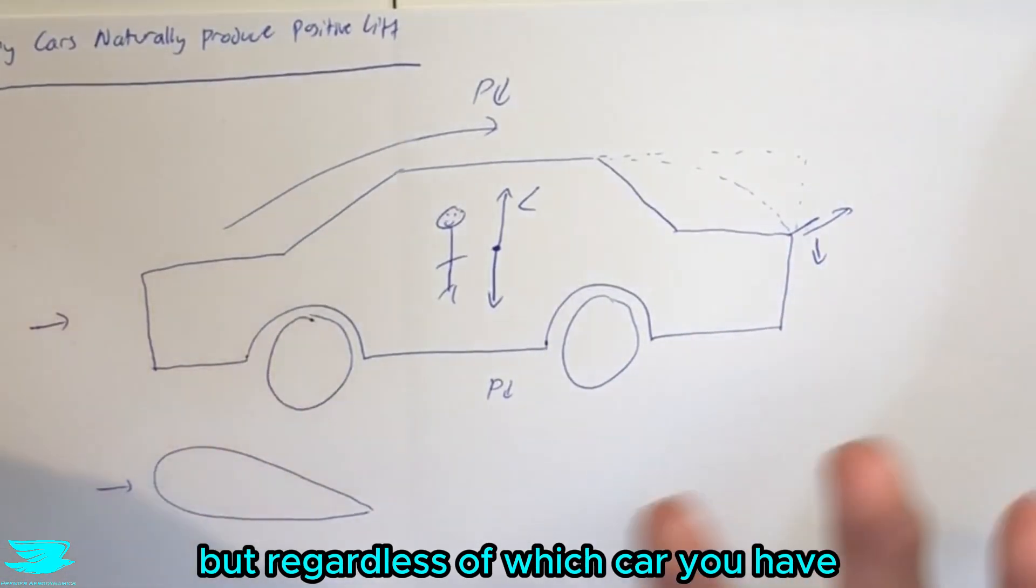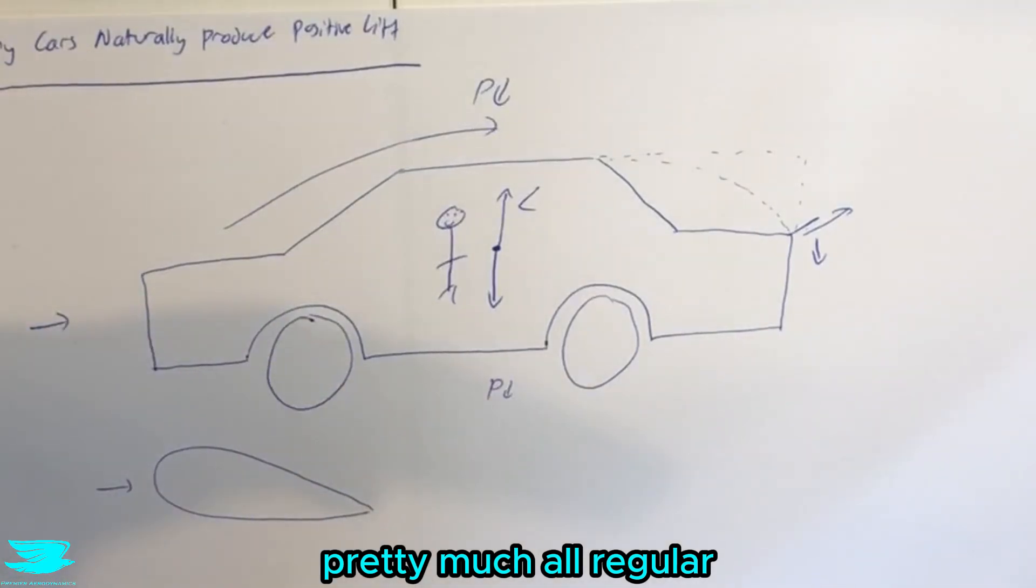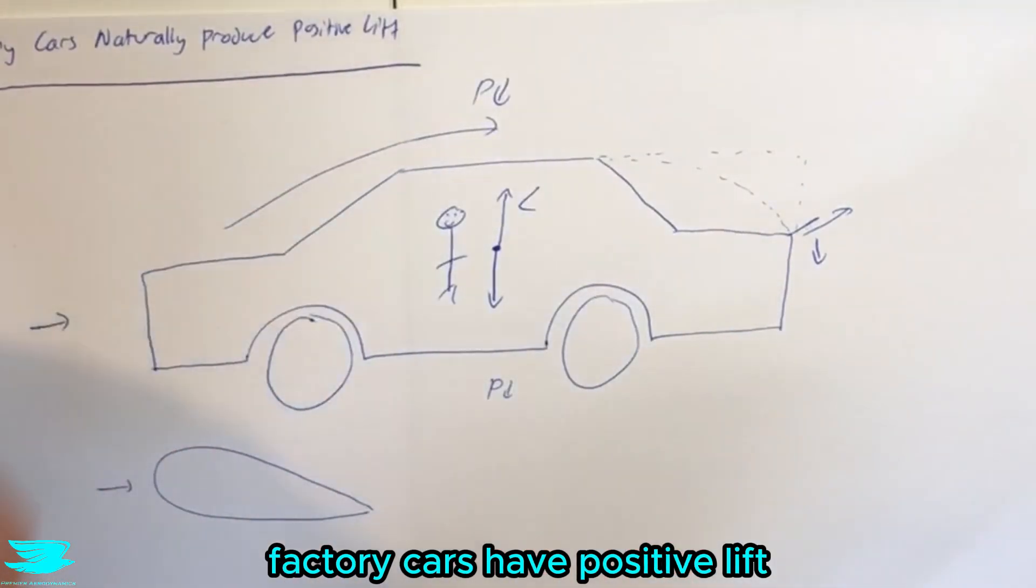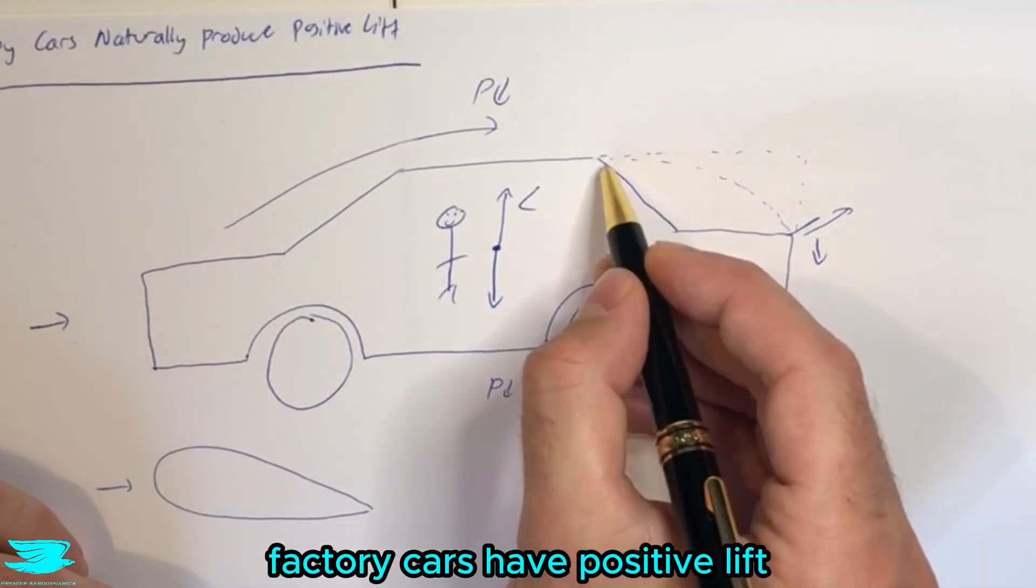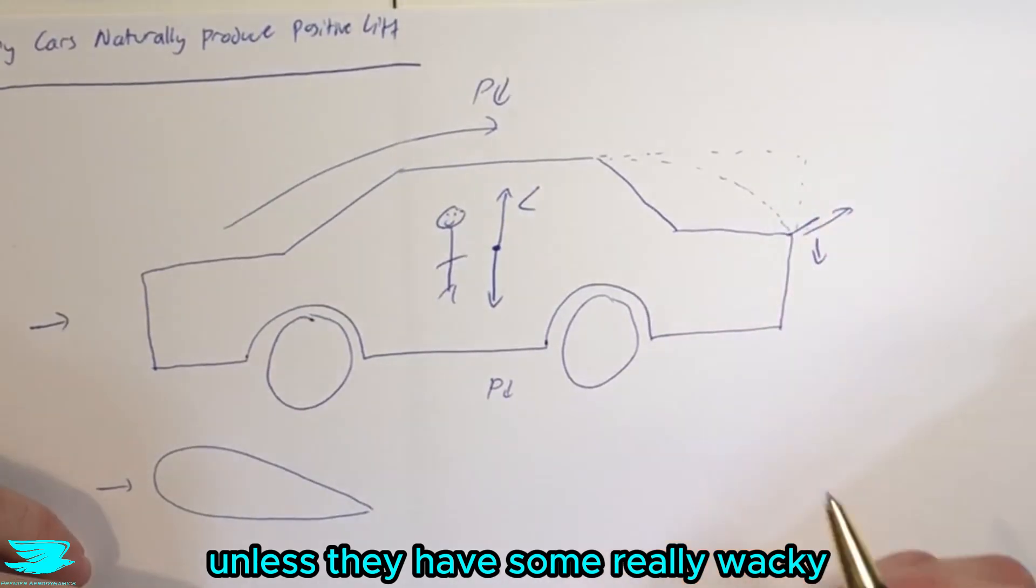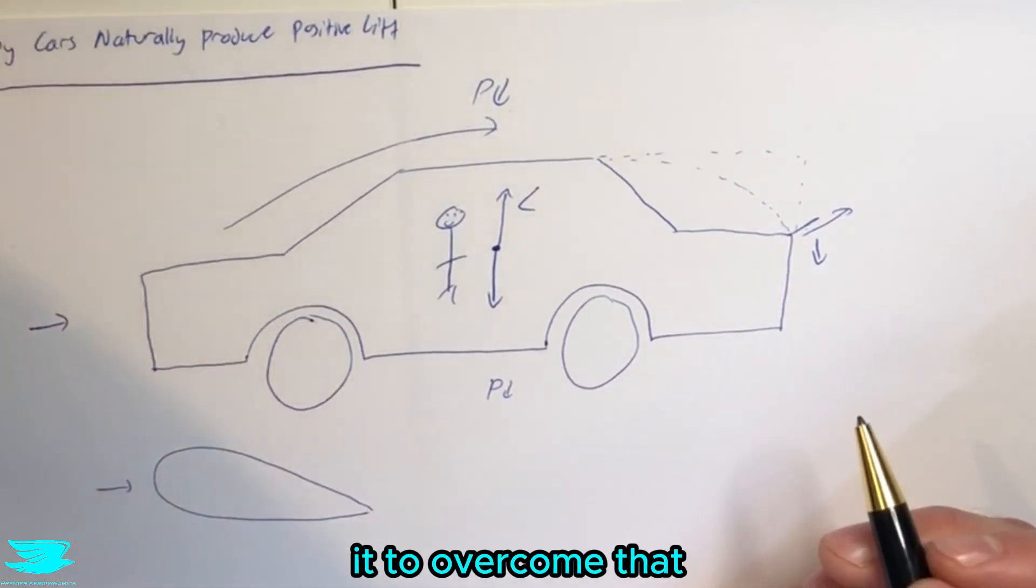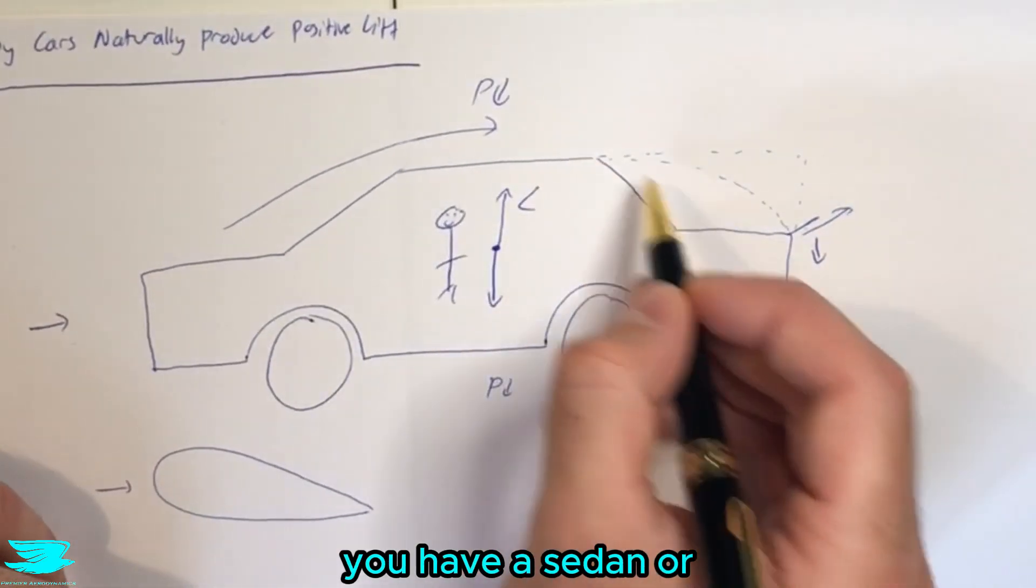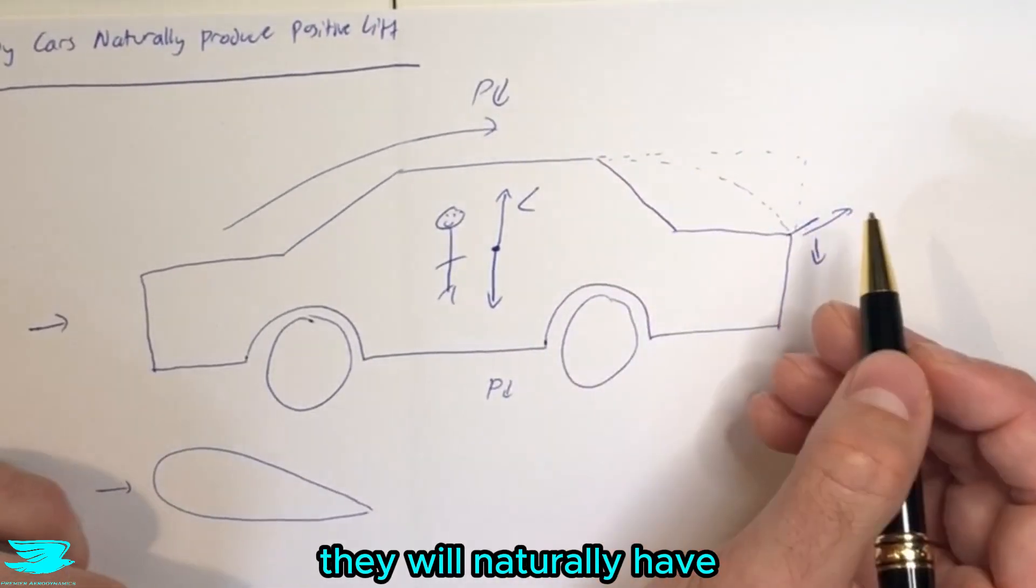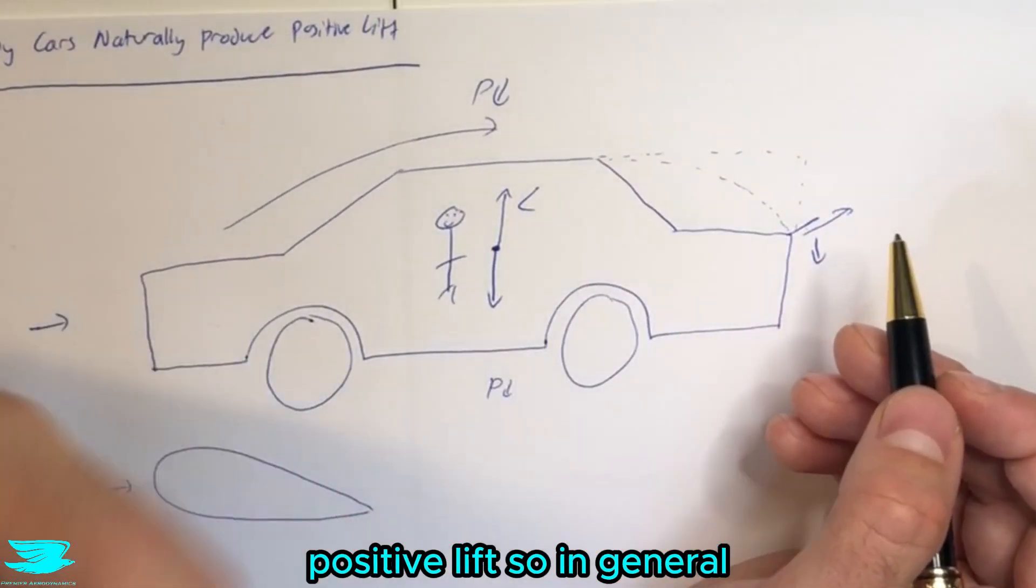But regardless of which car you have, pretty much all regular factory cars have positive lift, unless they have some really wacky aerodynamics associated with it to overcome that. So it doesn't matter whether you have a sedan or a wagon or a fastback, they will naturally have positive lift.